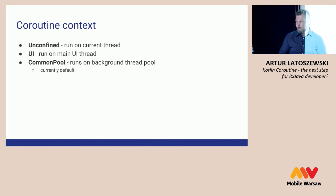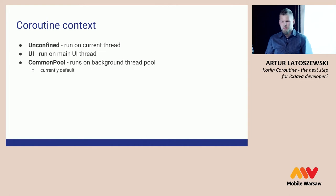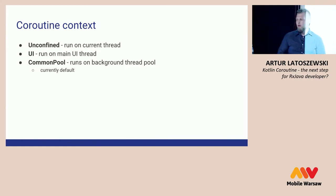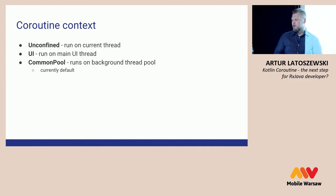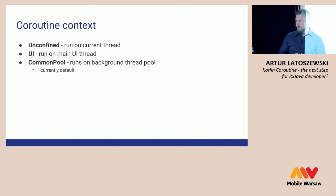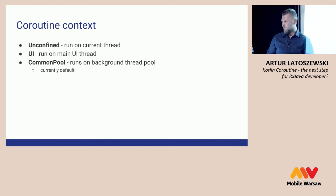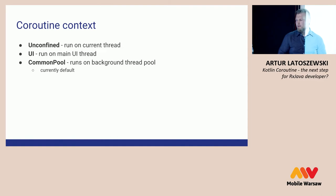Something about coroutine context. We know schedulers from RxJava — here we have context, and it works similarly. We have "Unconfined" context, which just runs on the current thread. We have "UI" thread, which runs on the main UI thread, just like Android main thread in RxJava. And we have "CommonPool", which runs on a background thread pool. CommonPool is based on the fork/join common pool implementation and is currently the default coroutine context — so if we don't pass any context to a coroutine builder, it will start in CommonPool.